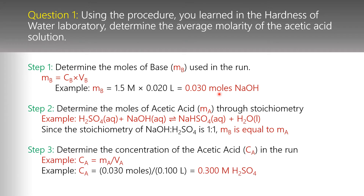This allows us to determine the concentration of the acid, because concentration is moles divided by volume. In my theoretical calculation, I used 100 milliliters of solution, which translates to 0.100 liters. Yours uses 25 milliliters, so that changes the denominator. In this calculation, my H₂SO₄ comes out to 0.300 molar.